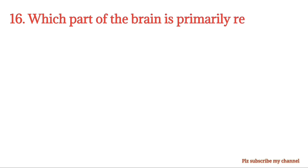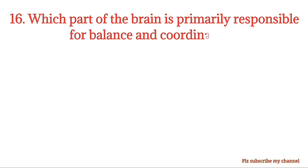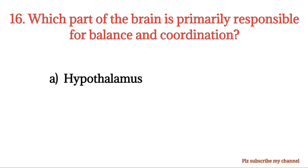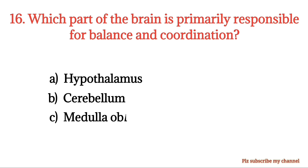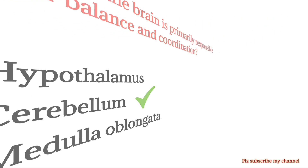MCQ number 16. Which part of the brain is primarily responsible for balance and coordination? Option A: Hypothalamus. Option B: Cerebellum. Option C: Medulla oblongata. Option D: Pons. The right option is Option B.